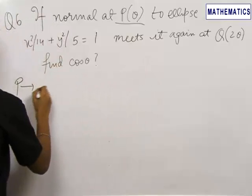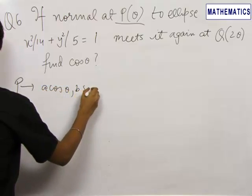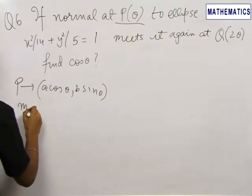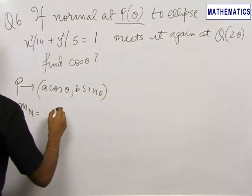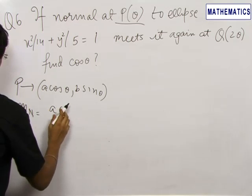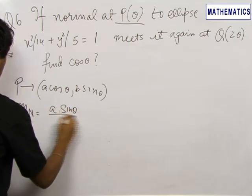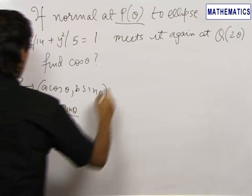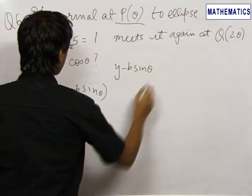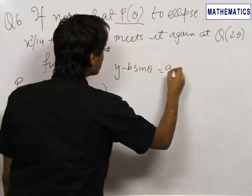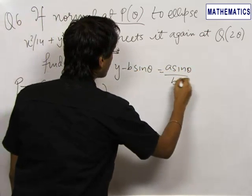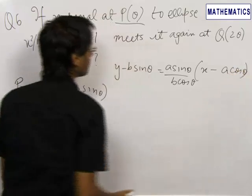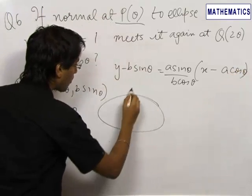We know point P is (a cosθ, b sinθ). We know the slope of the normal to be equal to a sinθ / b cosθ. Hence we can write the equation of the normal as y minus b sinθ is equal to (a sinθ / b cosθ) into (x minus a cosθ).